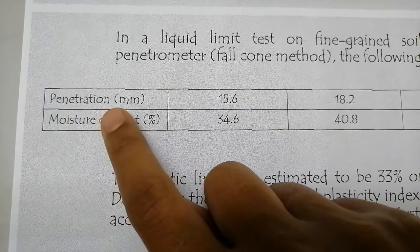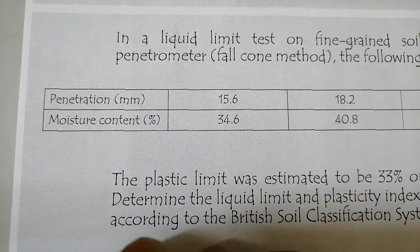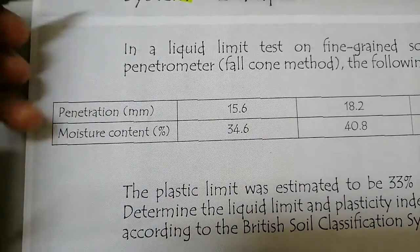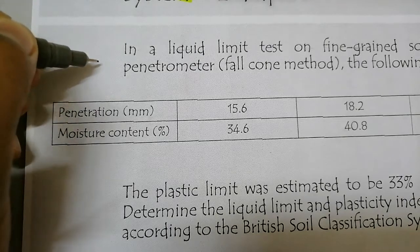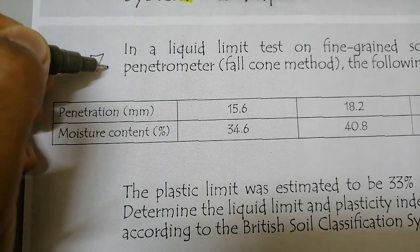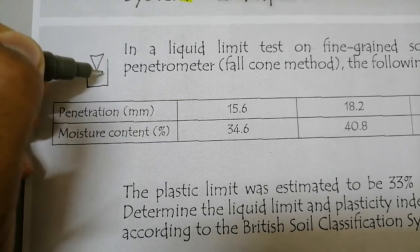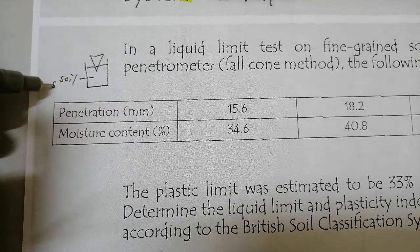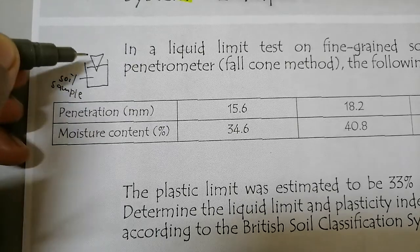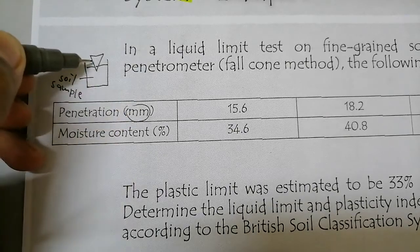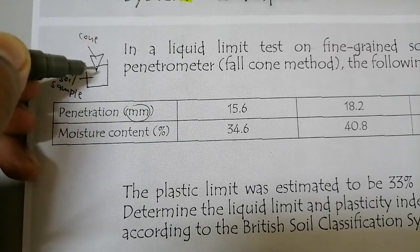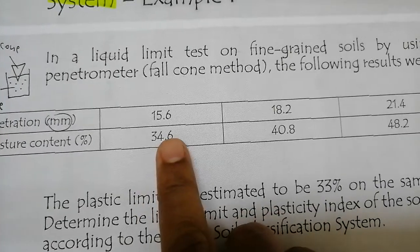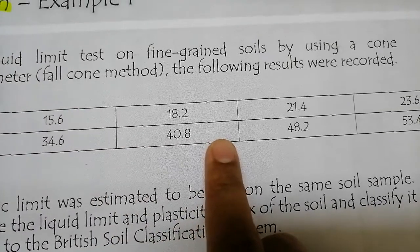In this example, the data was obtained from the fall cone method. Penetration here is in millimeters and moisture content is in percent. Penetration refers to the penetration of the cone into the soil sample. Here is a simple drawing — this is the cone and this is your soil sample below. So penetration in millimeters is the penetration of this cone into your soil sample.